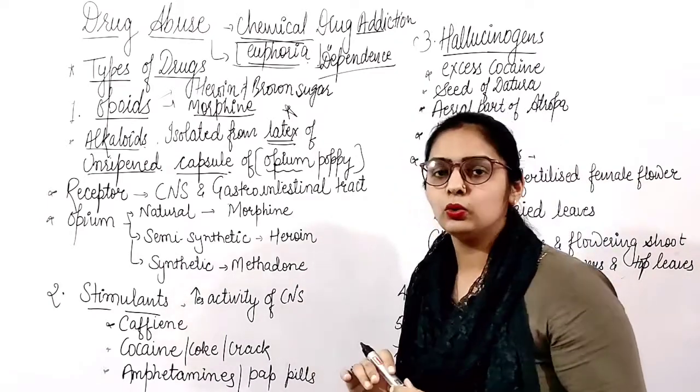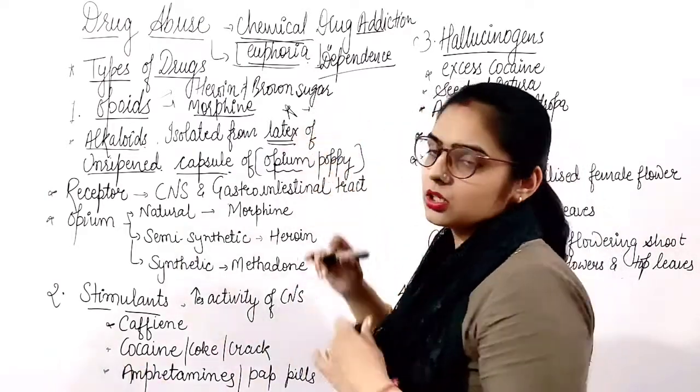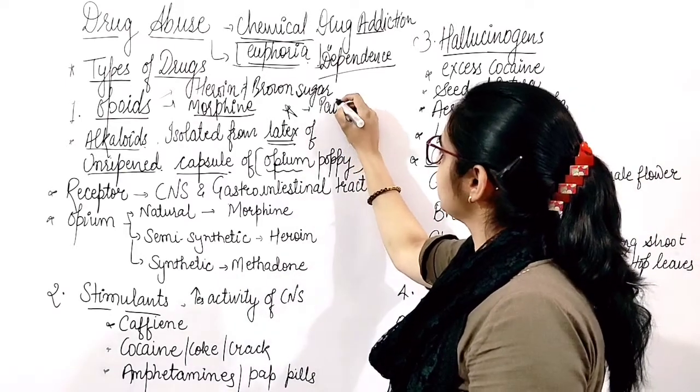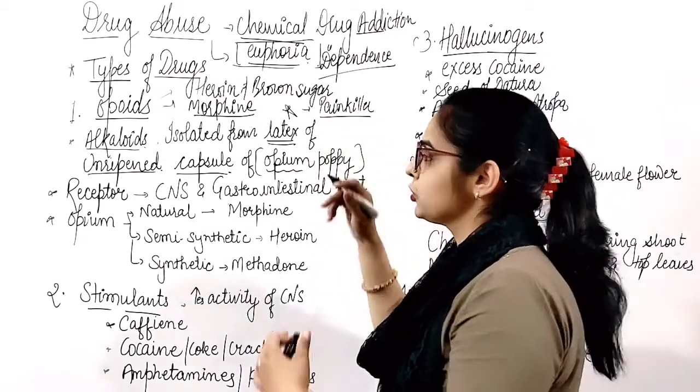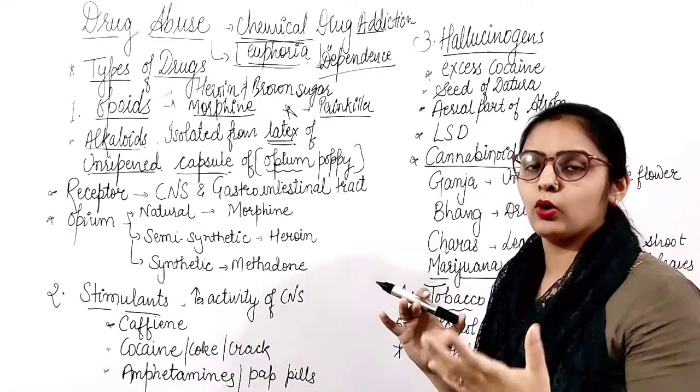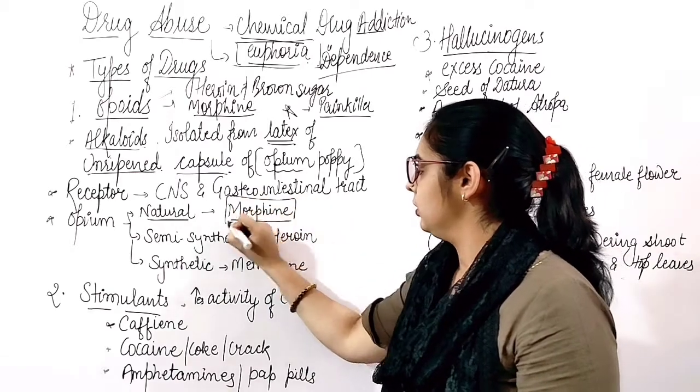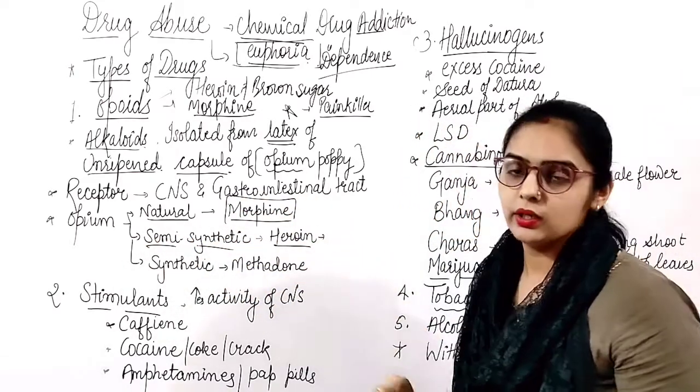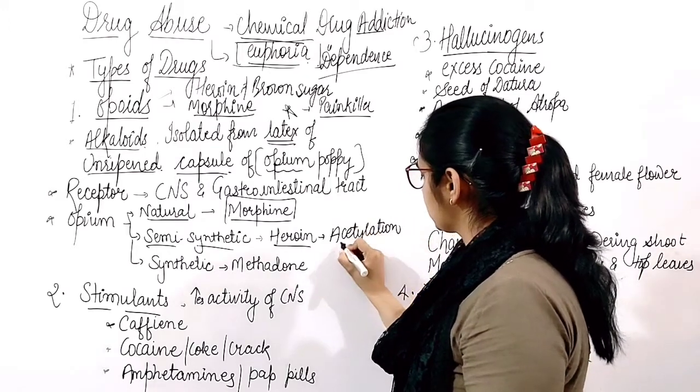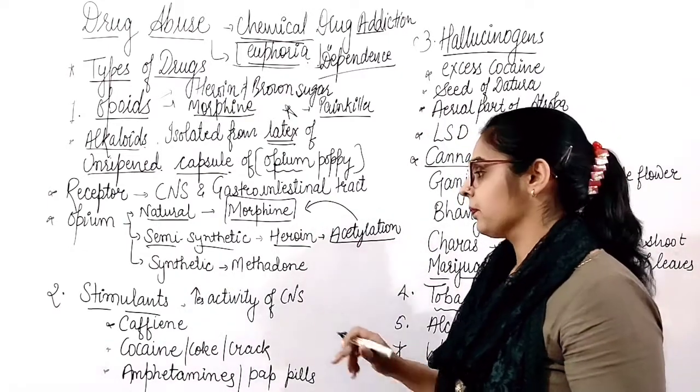Morphine is used as a painkiller after surgery when patients have pain. But people have started to use it for temporary happiness or for mental conditions. The natural opioid is morphine. Semi-synthetic forms are heroin, brown sugar, or smack, which are made by acetylation of morphine.